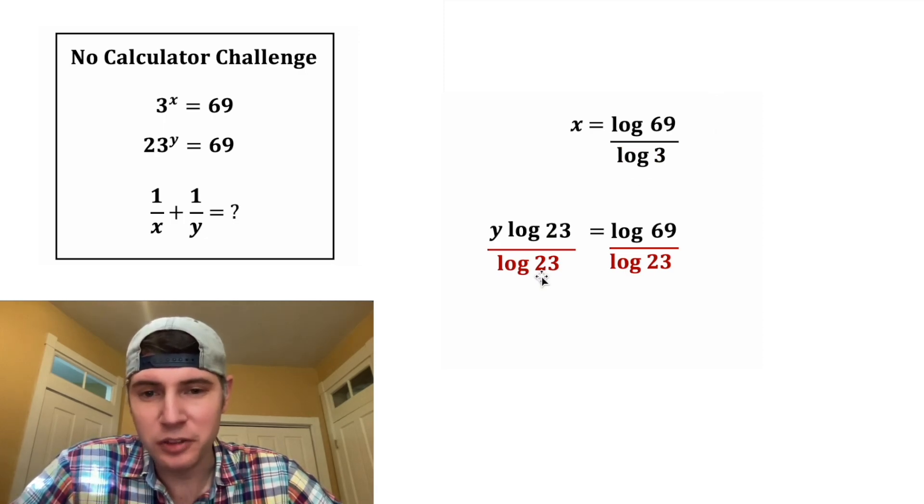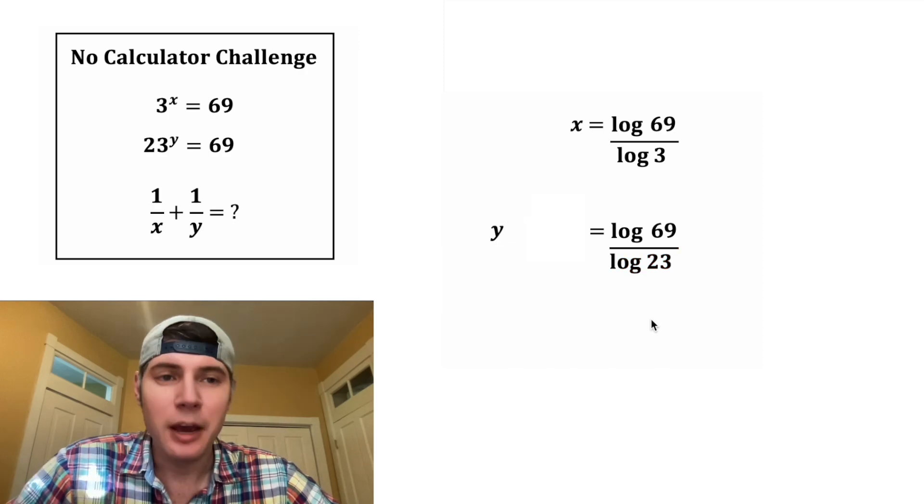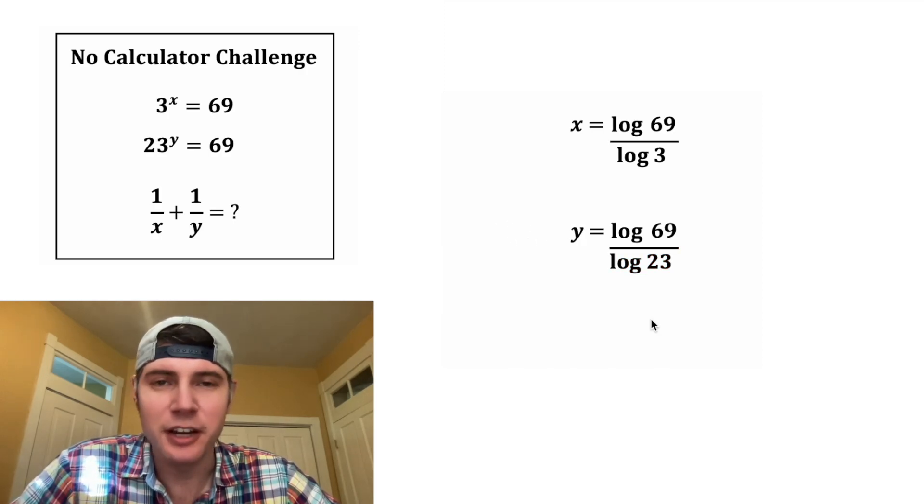And the same thing here, log 23 over log 23 cancels out. And we now know that y is equal to log 69 over log 23.